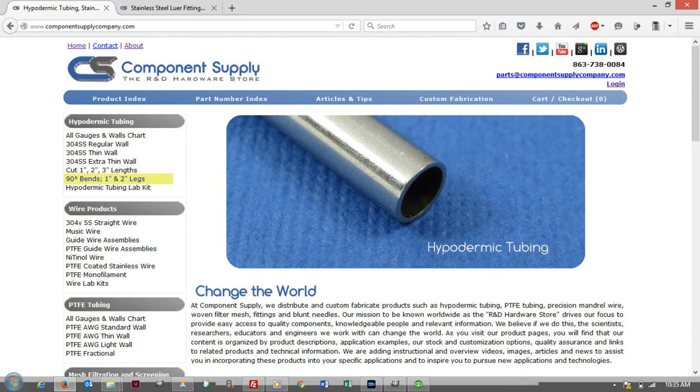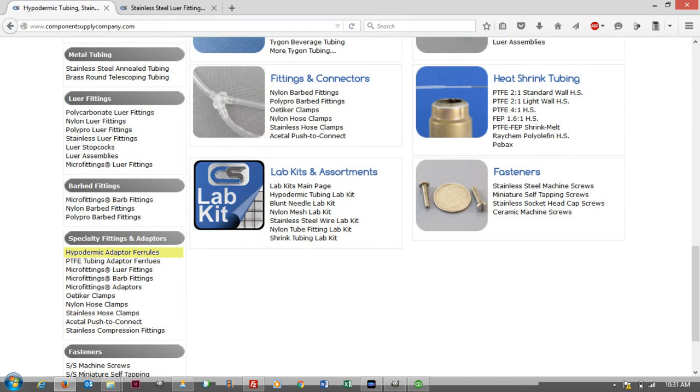Once you've selected your tubing size, view this page to select the ferrule size that matches the hypodermic tubing. Again, if you have questions about selecting the correct ferrule, please contact us or refer to our video linked below that goes into more detail.